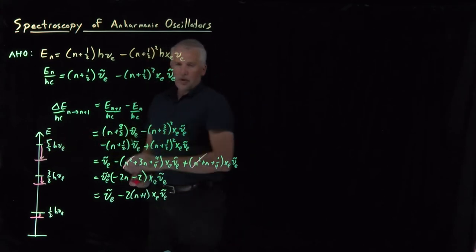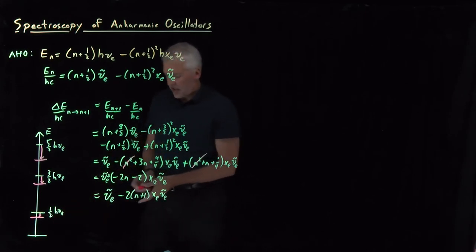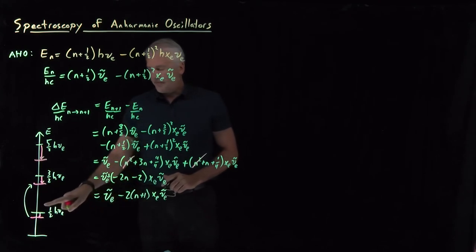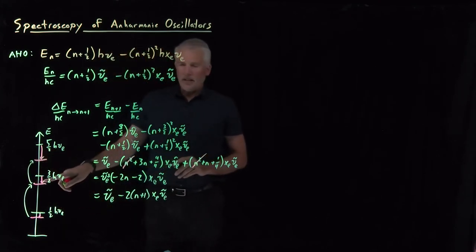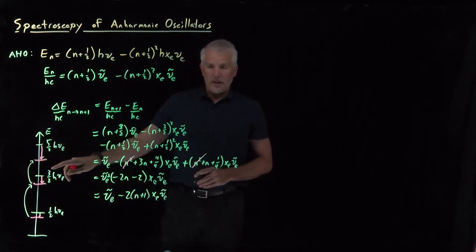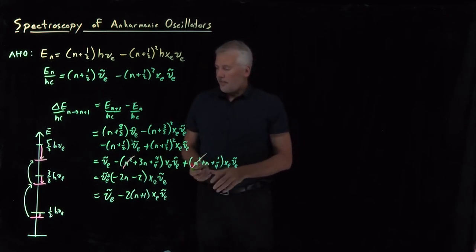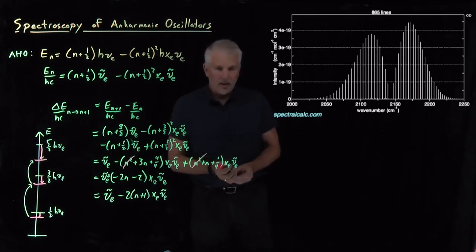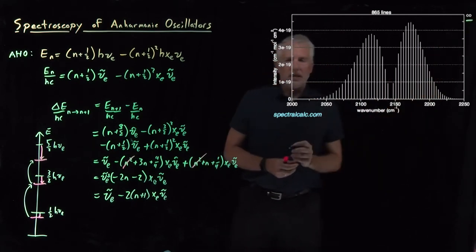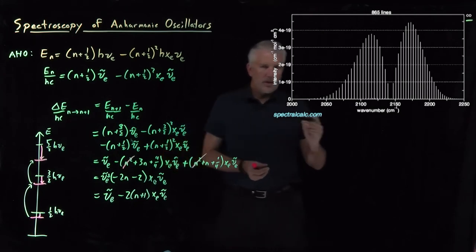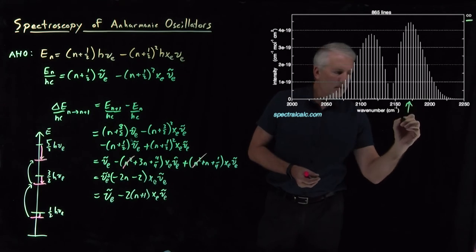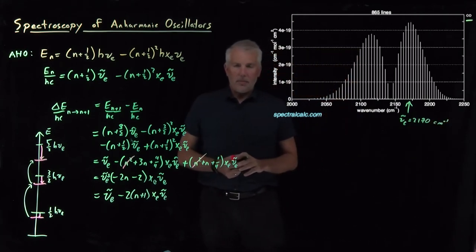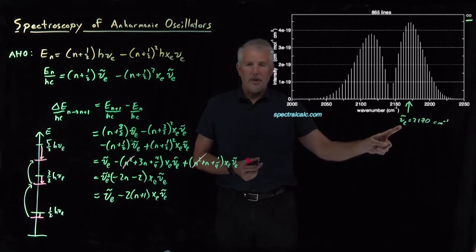Because upper levels are corrected by more than lower levels, every transition is slightly less than h-nu. Going from the zero state to the first state, it's a little less than h-nu. Going from the first state to the second, it's h-nu minus an even bigger correction. For an actual diatomic molecule — looking at the infrared absorption spectrum of carbon monoxide — we expected the spectrum to be centered around the fundamental vibrational frequency of 2170 wavenumbers when thinking only about the harmonic oscillator.